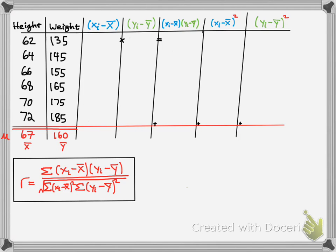Now you simply, what I did was I segmented this into a table for each component in the r formula. So xi minus x-bar, that's simply 62 minus 67, which is negative 5. Then I would do 64 minus 67, and I would get all these values, negative 3, negative 1, 1, 3, 5. And I would do the same thing, but with y. So you do 135 minus 160, which gives you negative 25. Then you do 145 minus 160, that would give you negative 15. Then you do all the subtraction, and you get these numbers.